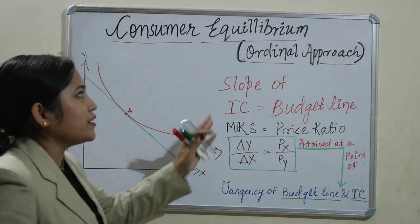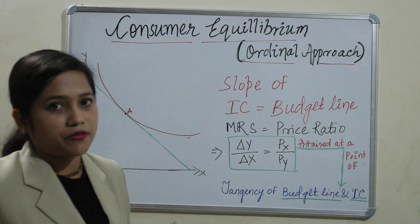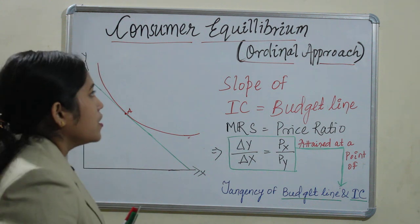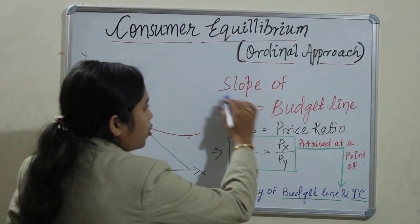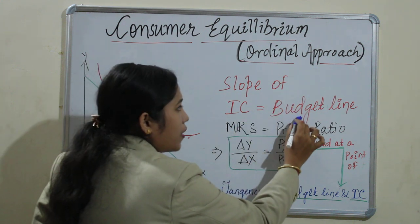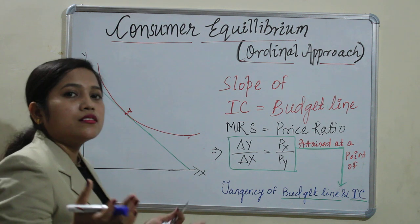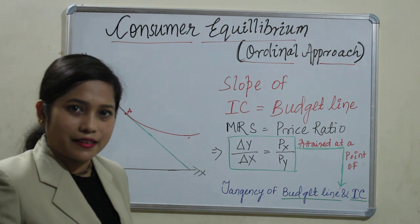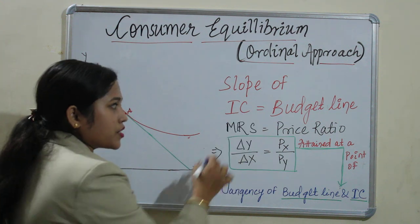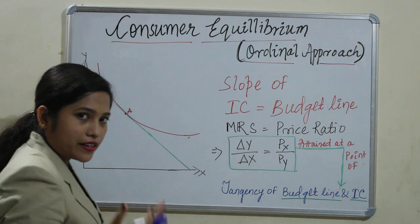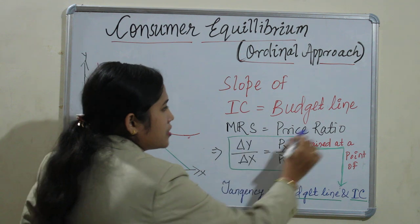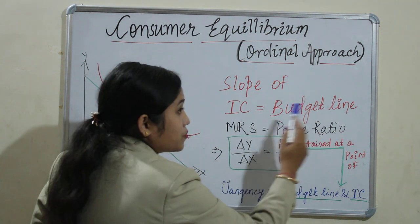How is it attained through the ordinal approach? In the ordinal approach we have covered indifference curve and budget line. The point where the slope of the indifference curve is equal to the slope of the budget line is called the point of consumer equilibrium. The slope of the indifference curve is the marginal rate of substitution.